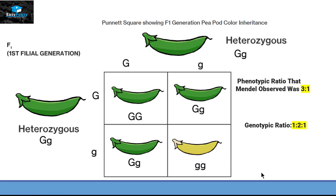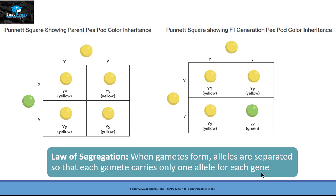By this way, Mendel's hypothesis becomes a law and the law of segregation says when gamete forms, alleles are separated so that each gamete carry only one allele for each gene. If we are going to observe only one characteristic of the pea plant then it will be called as monohybrid cross.